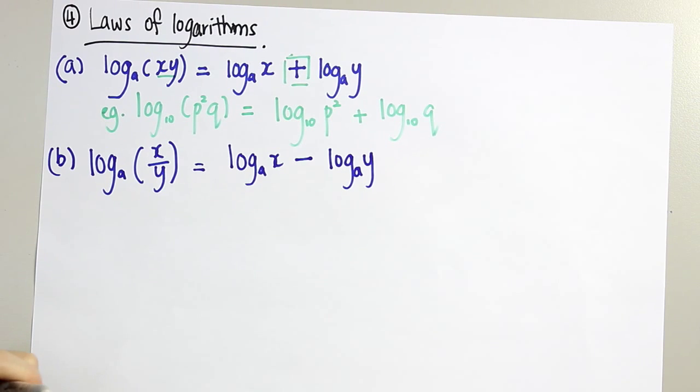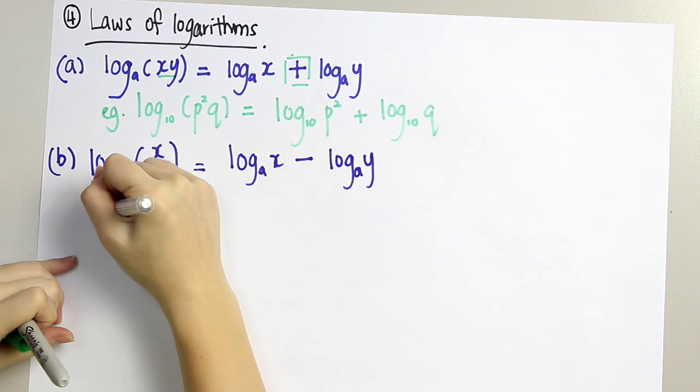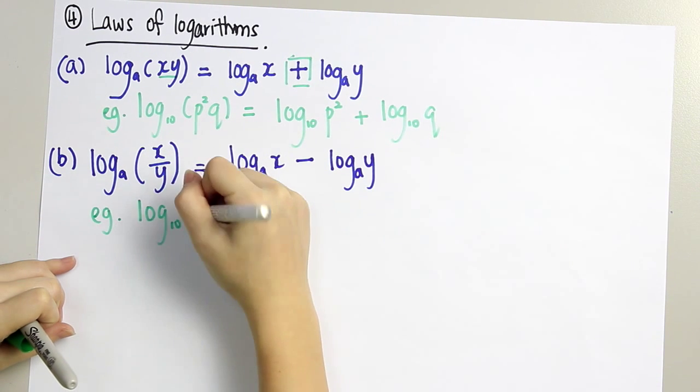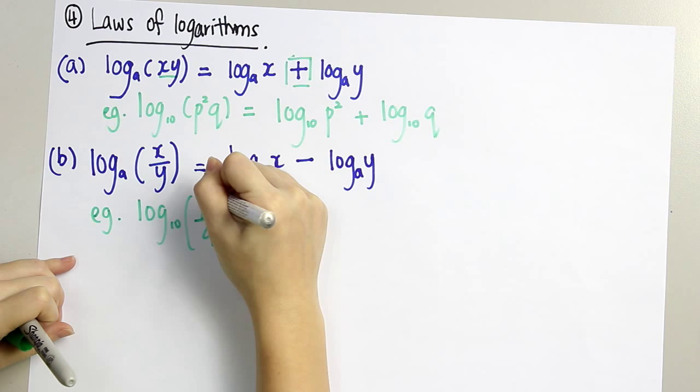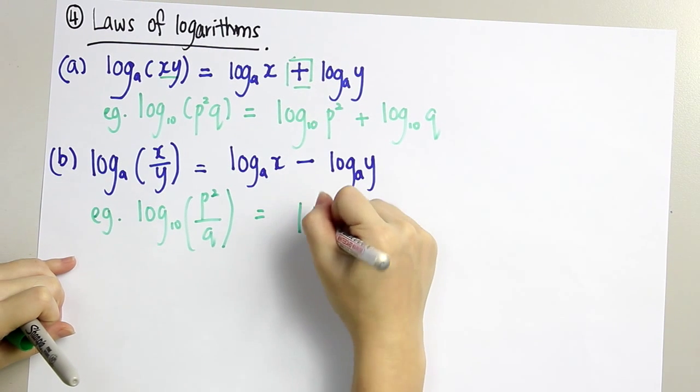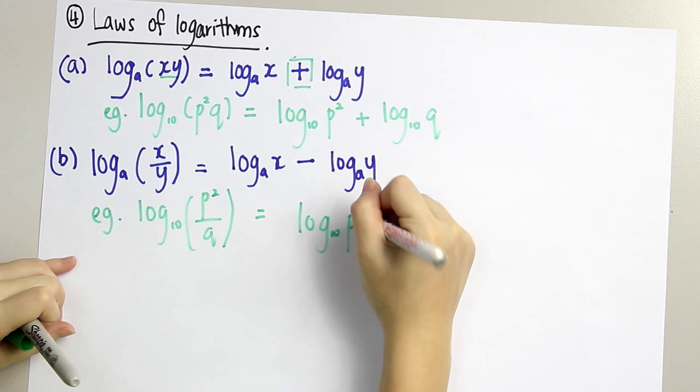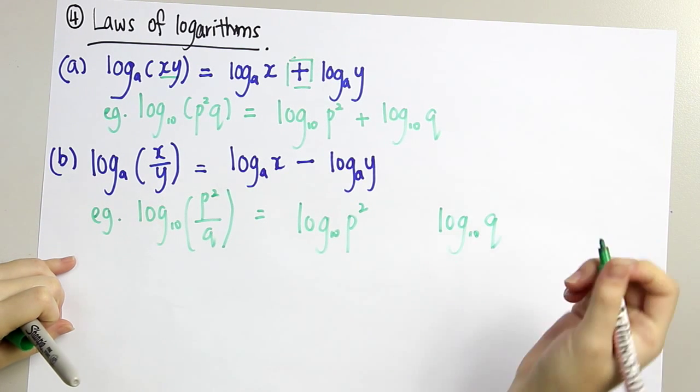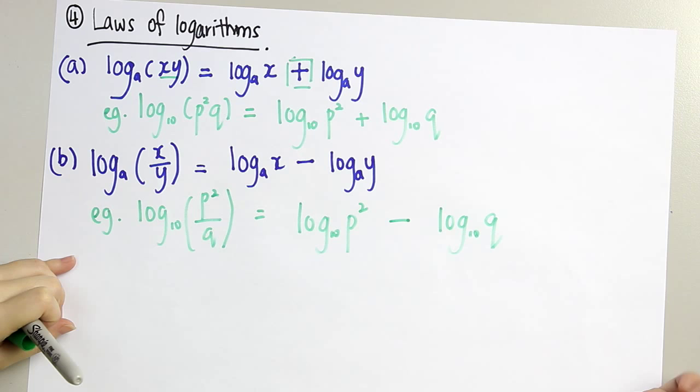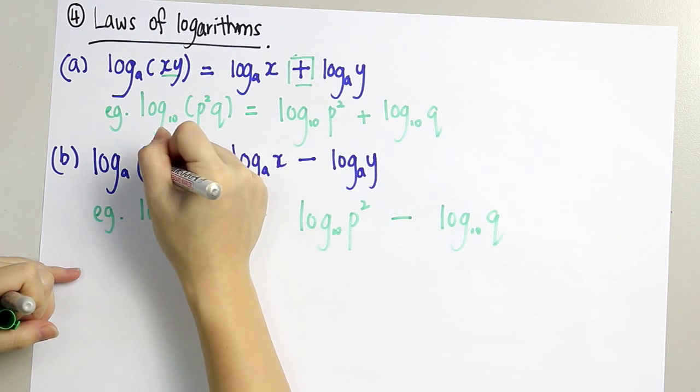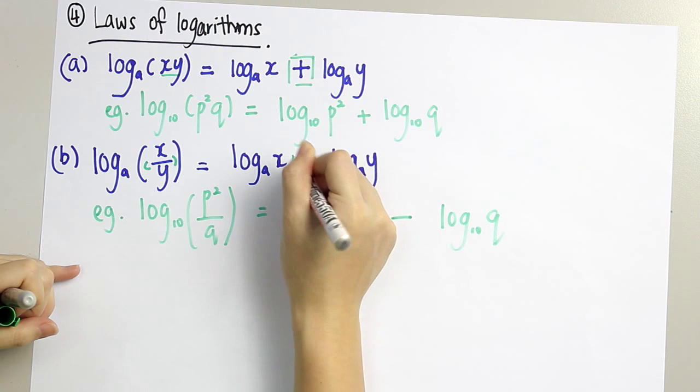So for example, log base 10 of p squared over q. We separate it both into log p squared and log q and minus them up. Minus this from this. So for division, we minus them up.